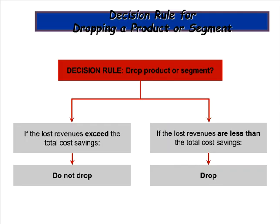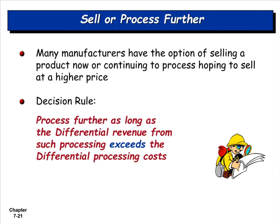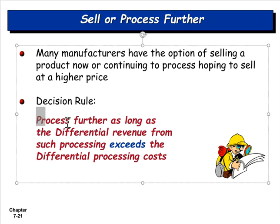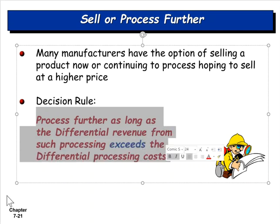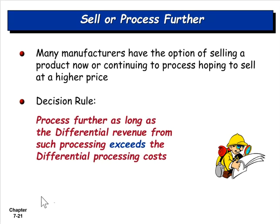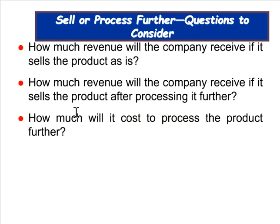Next is sell or process further. Companies often have the option of selling a product as-is or processing it further and selling it at a higher price. The basic decision rule: process further as long as the incremental or differential revenue from such processing exceeds the differential processing costs.